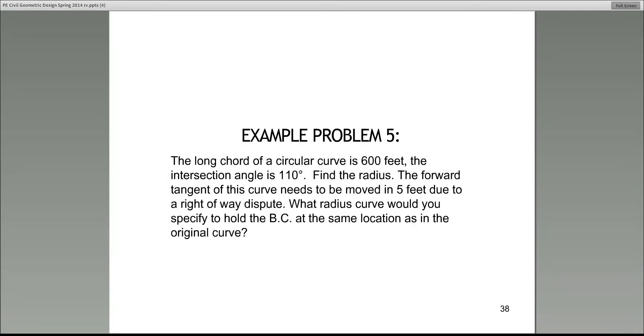The long chord LC of a circular curve is 600 feet. The intersection angle is 110 degrees. The one recommendation I have when you start solving these problems - I'm not going to do it here, but on the page write down, summarize what is given to you. For example, immediately write down LC is equal to 600 feet, I is equal to 110 degrees.